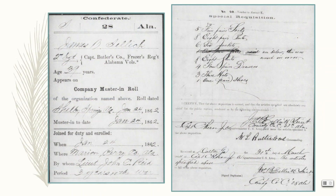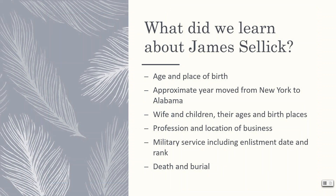James Selleck died in Florida in 1888 at the age of 65. So, what did we learn about Mr. Selleck? We know his age and place of birth. We know approximately when he moved from New York to Alabama. We know the names, ages, and birthplaces of his wife and children. We know his profession and where his business was located. We know about his military service, including when he enlisted and his rank. And we know when he died and where he was buried. All of this information grew from a single entry on the 1870 Industrial Schedule.